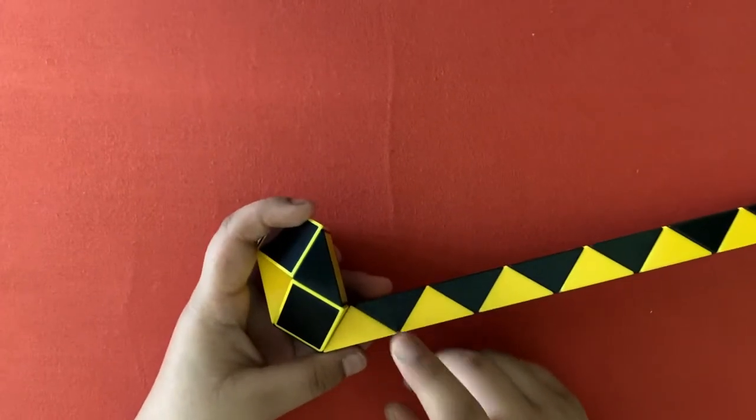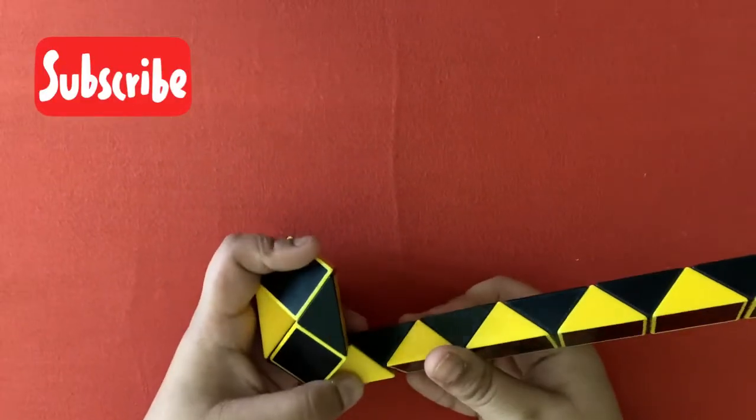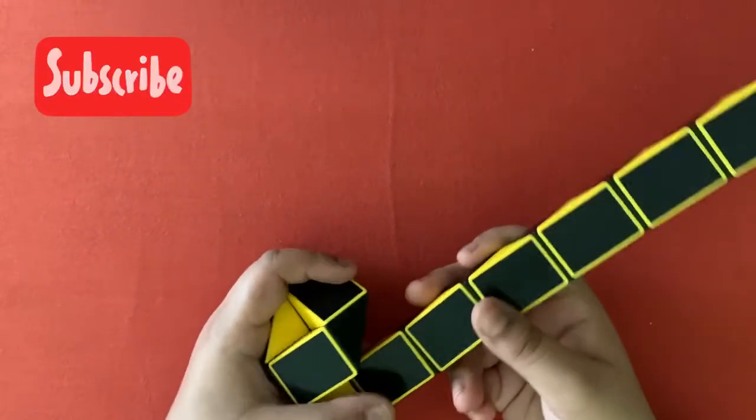Now count two pieces: one, two. Take the second piece, rotate it upwards.